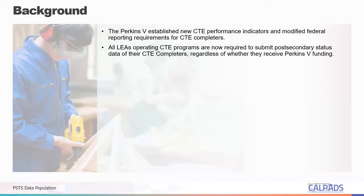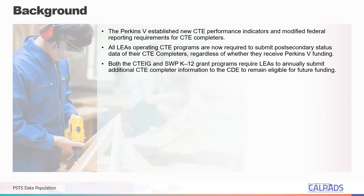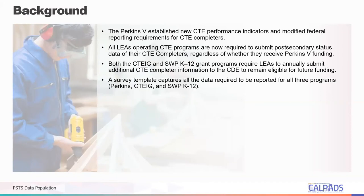All LEAs operating CTE programs are now required to submit post-secondary status data of their CTE completers, regardless of whether they receive Perkins V funding or not. Both the Career Technical Education Incentive Grant, or CTEG, and Strong Workforce Program K-12 grant programs require LEAs to annually submit additional CTE completer information to the CDE to remain eligible for future funding. This new survey template captures all the data required to be reported for all three programs.